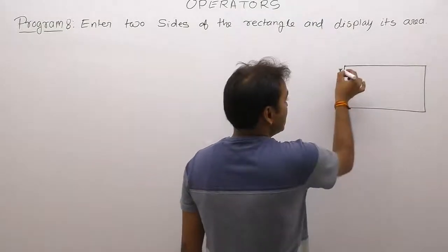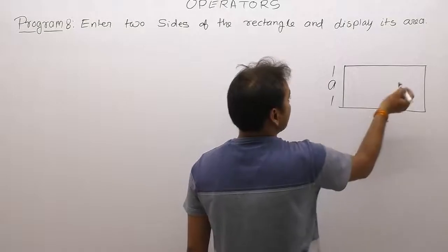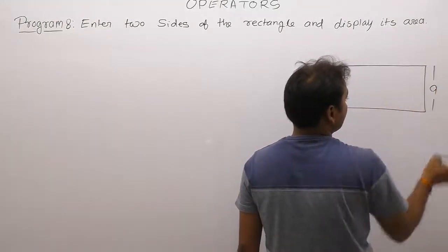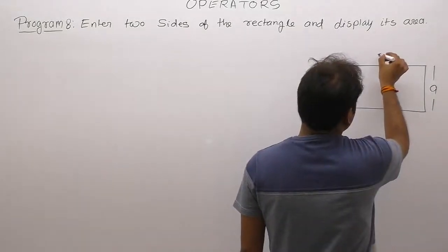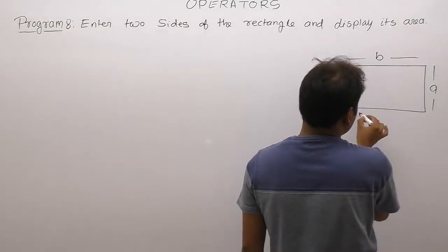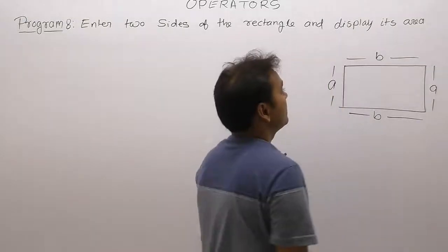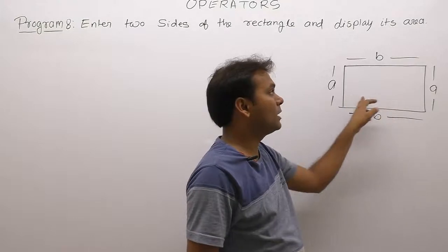For example, we are having some rectangle like that. Sides first side something A. This one is something A. Again this one is also A. Then this one is B. Also something B. Like that. There are two sides. These two sides are exactly same size. This side is also exactly same size.